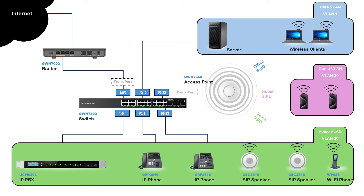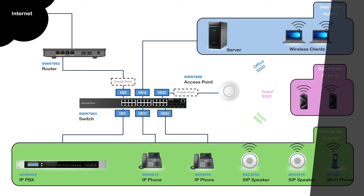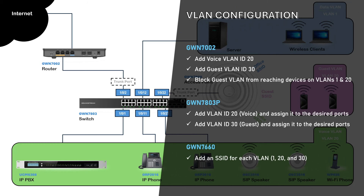To implement this network diagram, the GWN router must be configured with the network parameters for VLANs 20 and 30. For security purposes, the router must be configured to block devices on the guest network from reaching devices on the voice and data VLANs. The same VLAN IDs must be added on the GWN switch before they can be configured on any port. On the GWN access point, three SSIDs will be created to serve wireless clients for each VLAN.